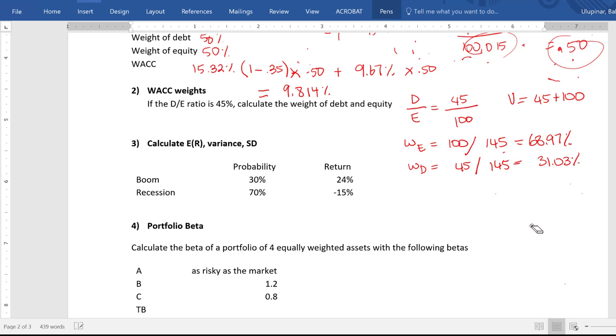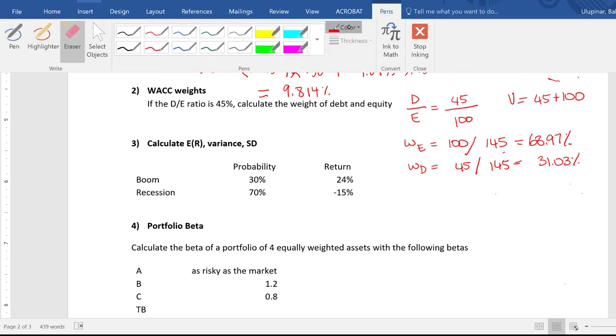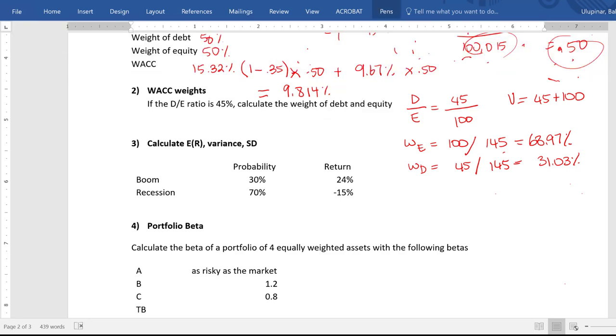Now let's look at the third problem. So we are going to calculate the standard deviation. And to calculate the standard deviation here, we are going to need expected return. And then we will calculate the variance and the square root of variance will be the standard deviation. So let's calculate the expected return first.